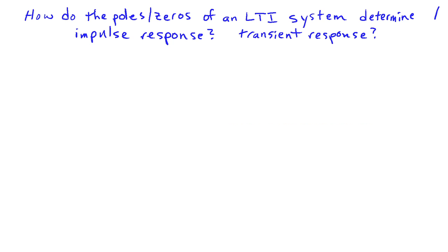The poles and zeros of a system give us a lot of information about the nature of the impulse response of that system. We're going to look at how the poles and zeros determine the impulse response, as well as what they can tell us about the transient response of the system.